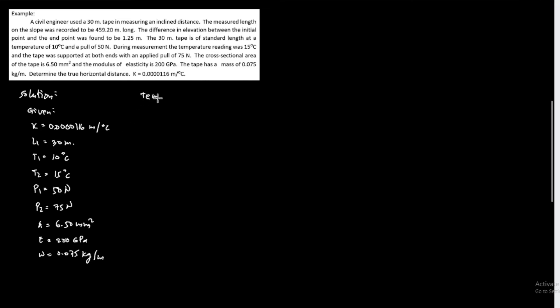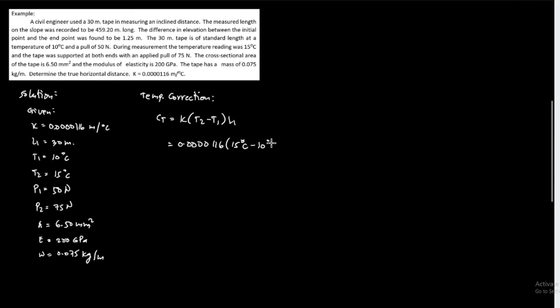First, find the temperature correction. Using the formula C sub T equals K times (T sub 2 minus T sub 1) times L sub 1: K equals 0.0000116, T sub 2 equals 15 degrees Celsius, T sub 1 equals 10 degrees Celsius, L sub 1 equals 30 meters. The temperature correction C sub T equals 0.00174 meter.